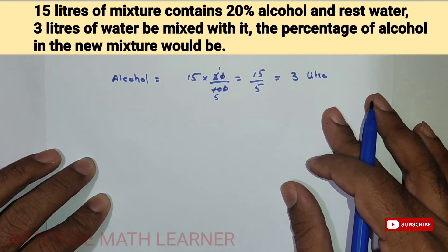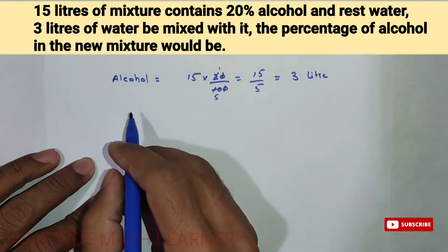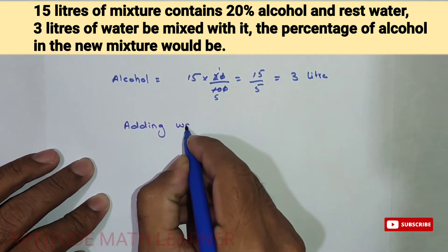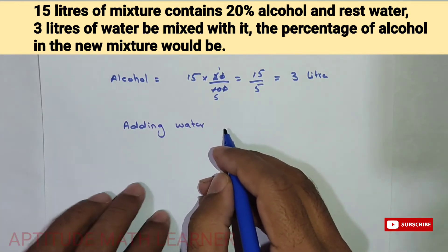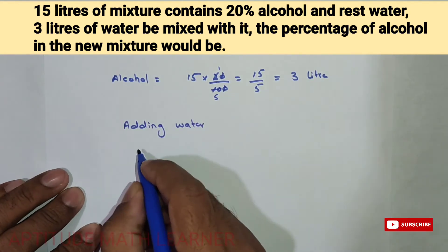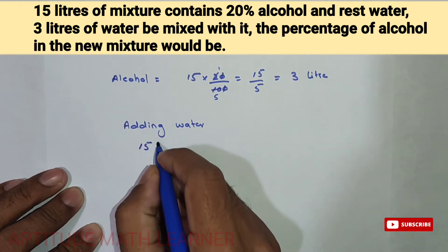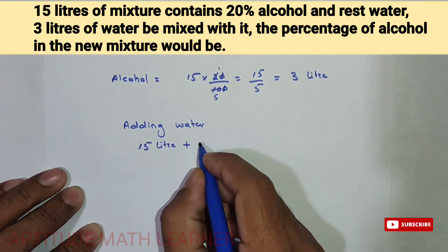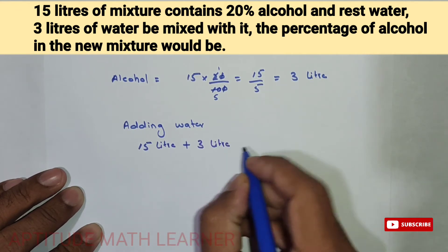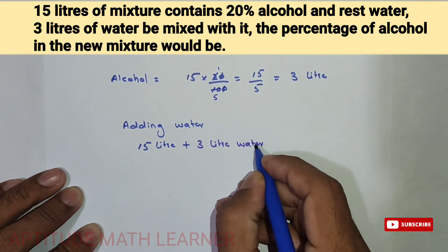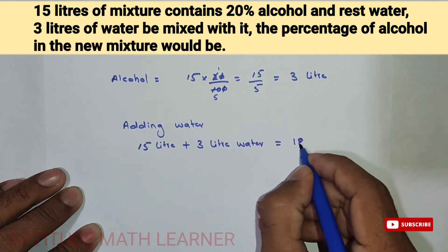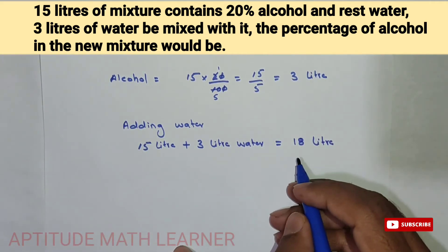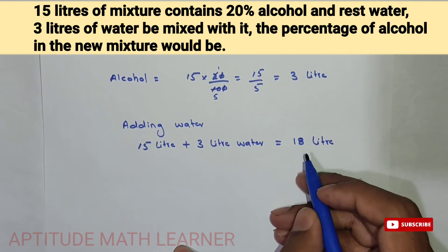In the next part of the question, if three liters of water be mixed in it, we are adding water to the 15 liters. So 15 plus 3 liters of water gives us 18 liters total.